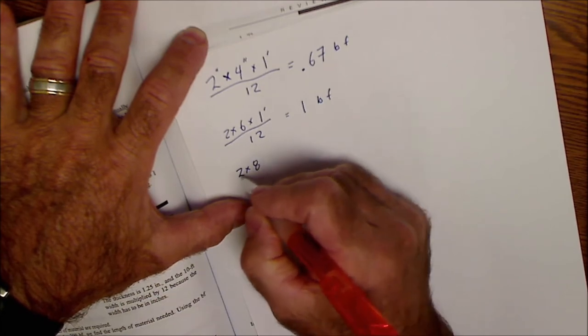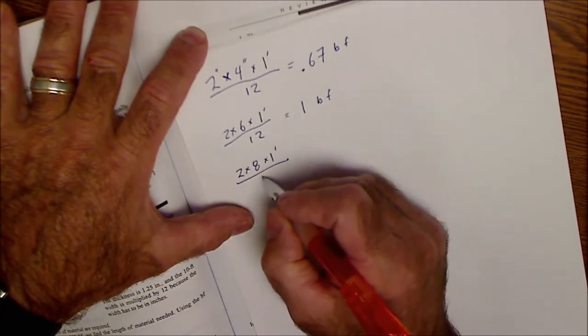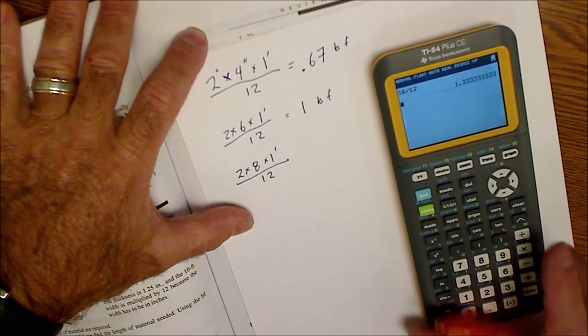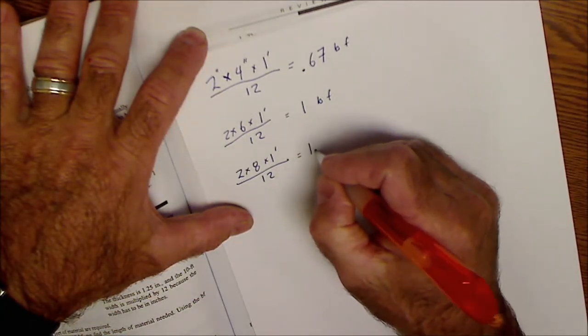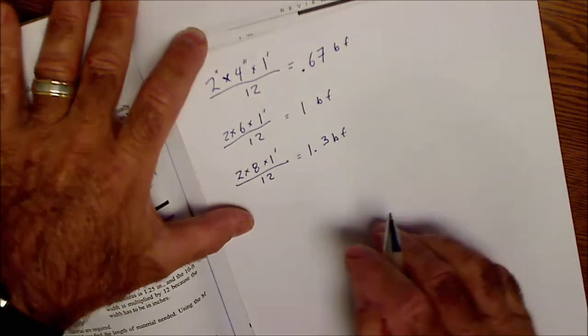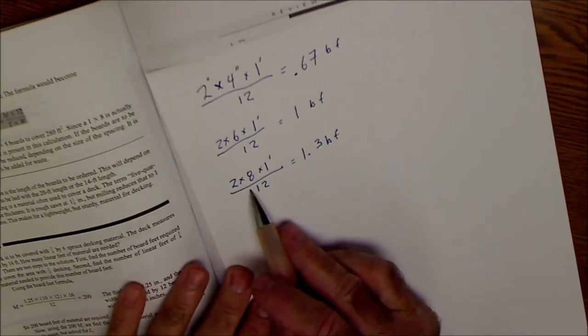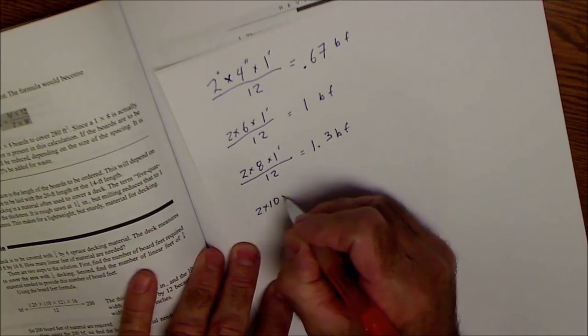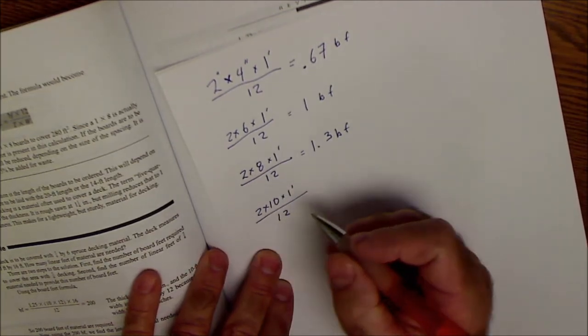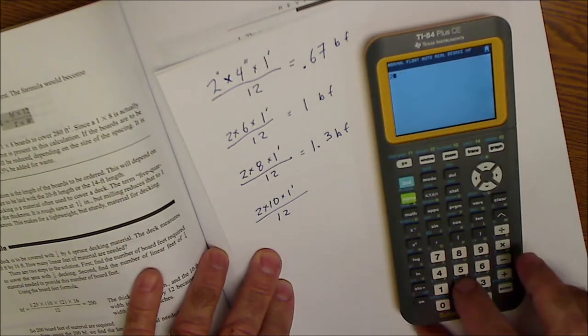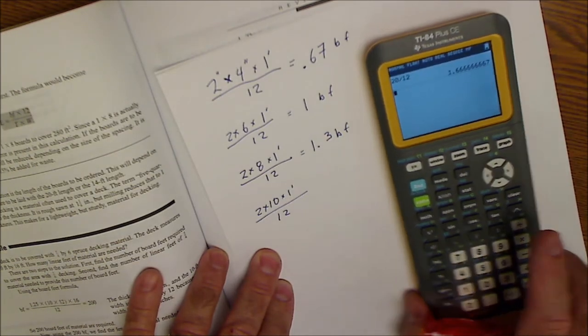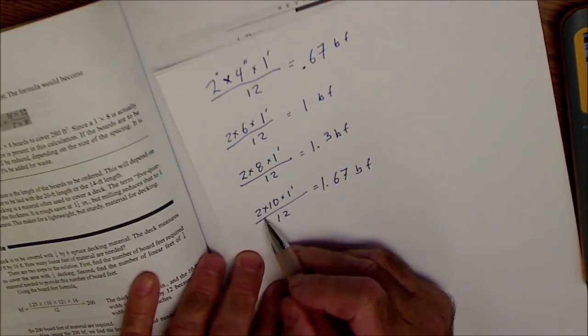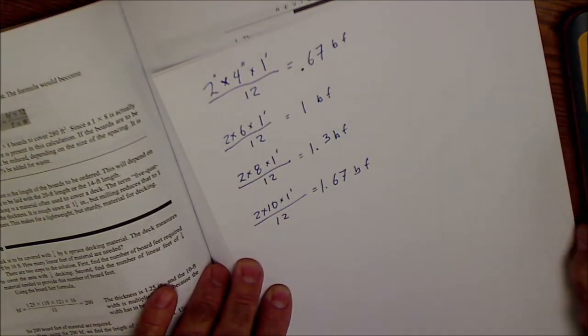2x8 times 1 foot divided by 12 will be 16 divided by 12 or 1.3 board feet. So one linear foot of a 2x8 is 1.3 board feet. I'll do the 2x10 as well. 2x10 by 1 foot long divided by 12 will be 20 divided by 12, which is 1.67 board feet. So a linear foot of a 2x10 is equal to 1.67 board feet.